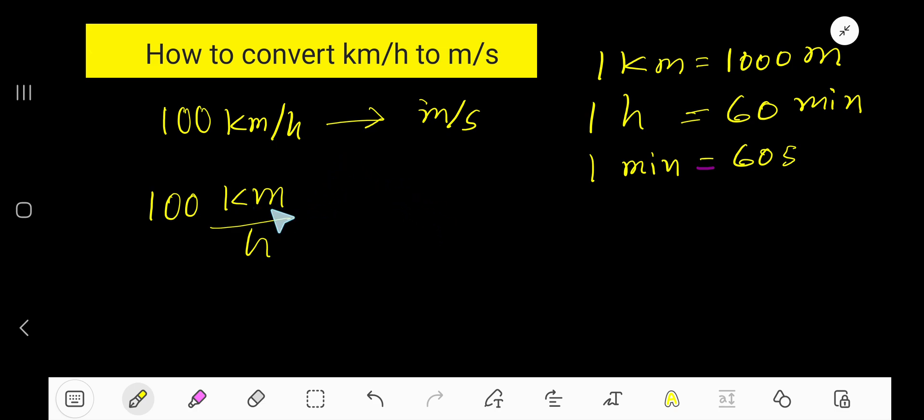We need to convert kilometers to meters and hours to seconds, top to top, bottom to bottom. The relation between kilometer and meter is 1 kilometer equals 1000 meters. This is the conversion equation. For hours, we need to convert to seconds. At first step, we'll convert hour to minute: 1 hour equals 60 minutes. Then from minute we'll convert to seconds: 1 minute equals 60 seconds.